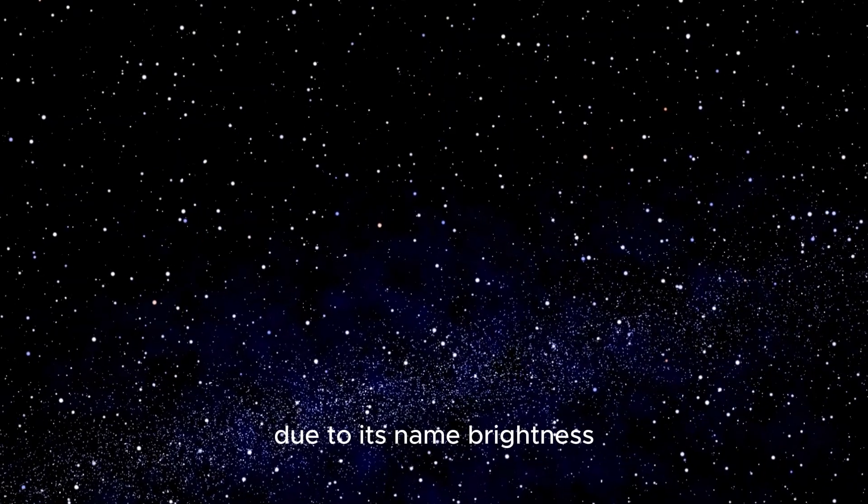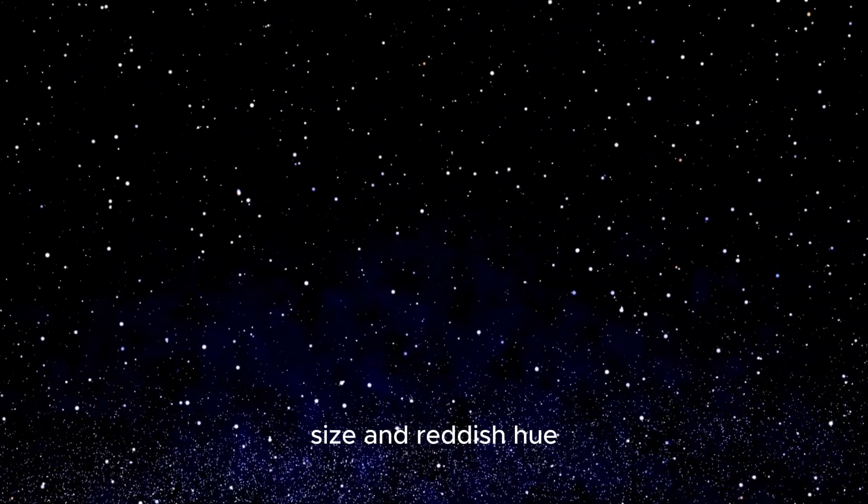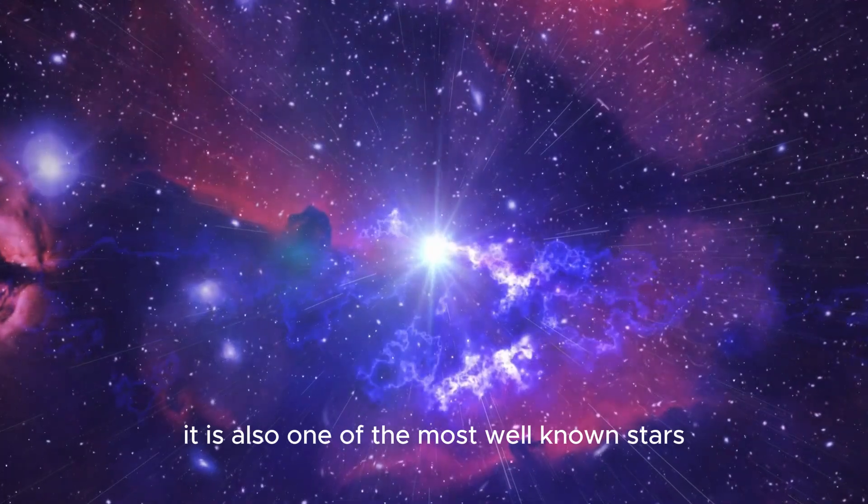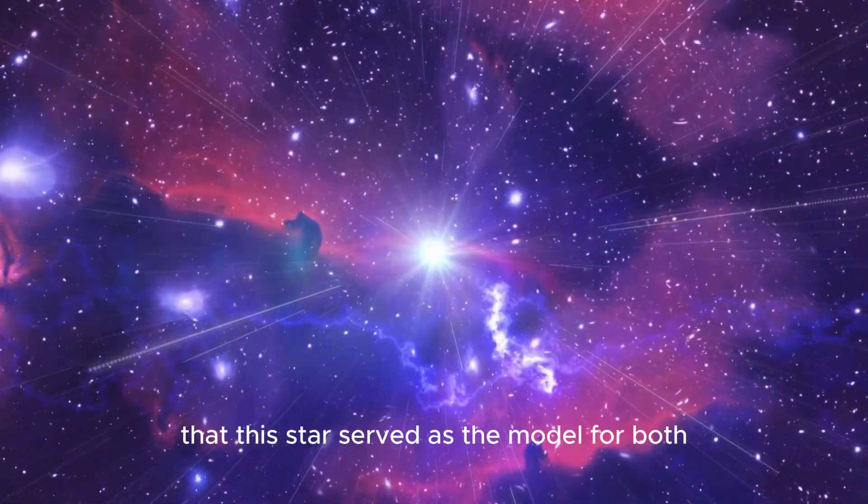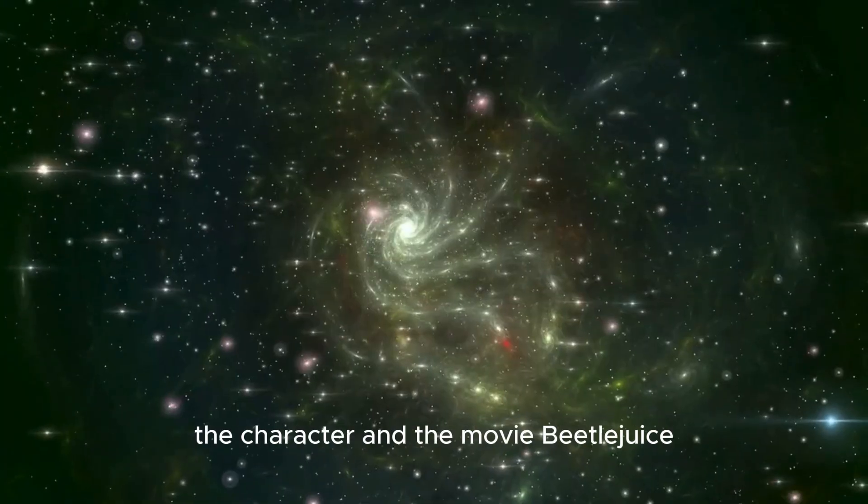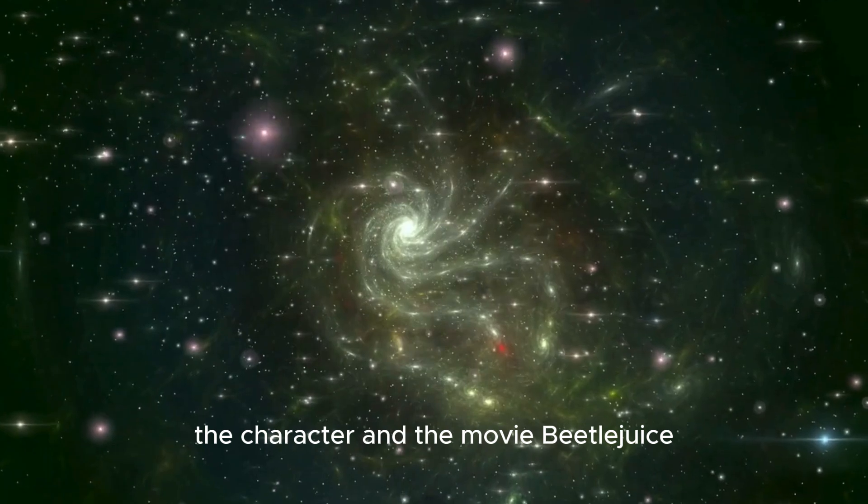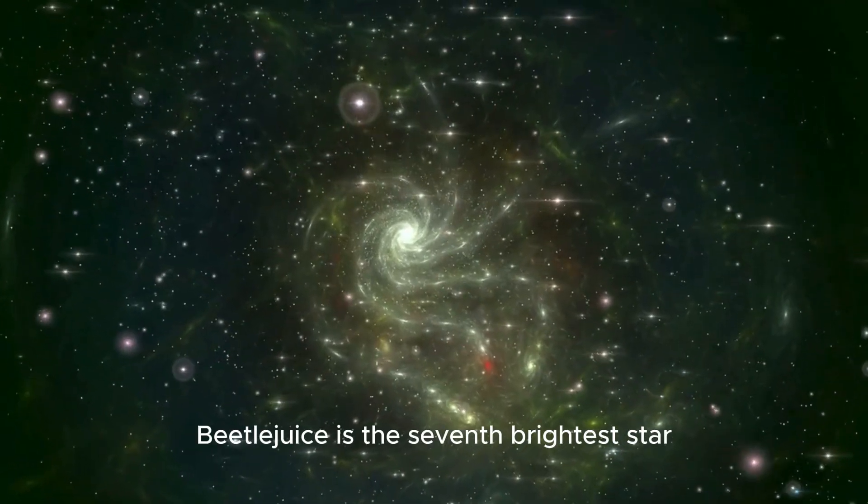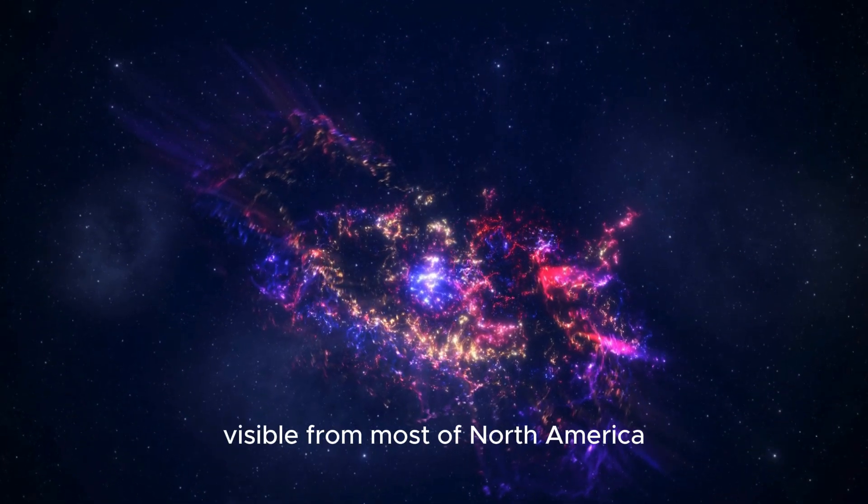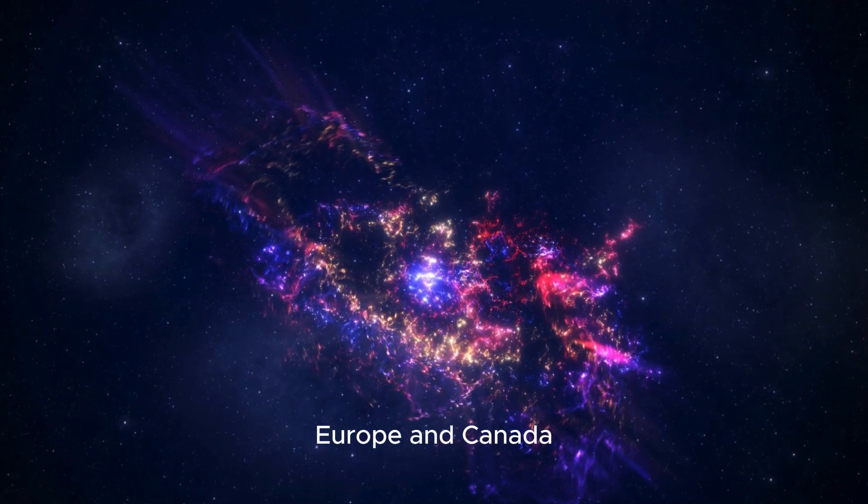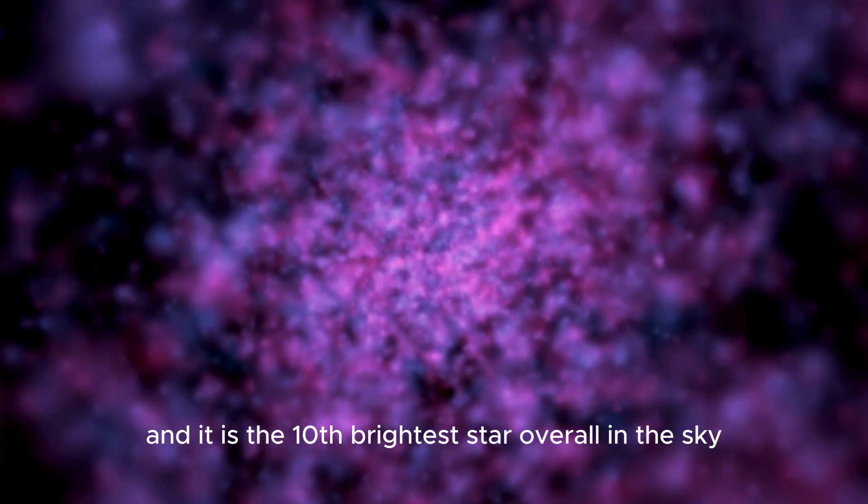Betelgeuse is Alpha Orionis due to its name, brightness, size, and reddish hue. It is also one of the most well-known stars. It's noteworthy that this star served as the model for both the character and the movie Beetlejuice. Betelgeuse is the seventh brightest star visible from most of North America, Europe, and Canada, and it is the tenth brightest star overall in the sky.